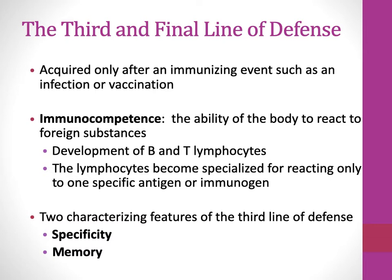Two important characteristics distinguish the third line of defense from the others: specificity and memory. Specificity means it recognizes specific antigens — not just self versus non-self, but it can tell the difference between hemorrhagic E. coli versus beneficial E. coli, for example. Memory means that once you've been exposed to something, the response afterward is quicker and stronger, because a pool of B cells and T cells are saved as memory cells.